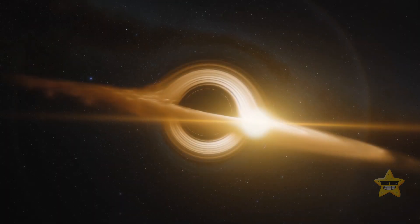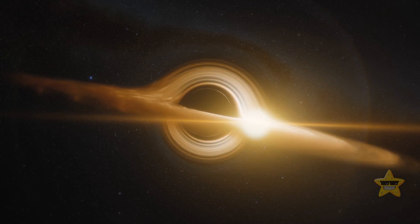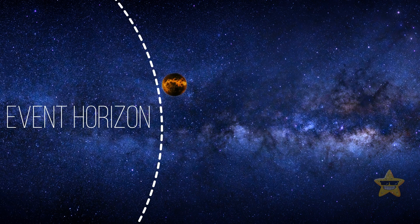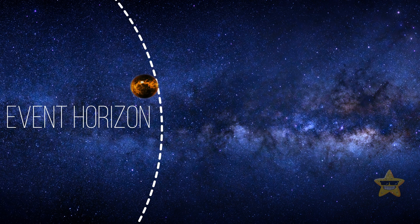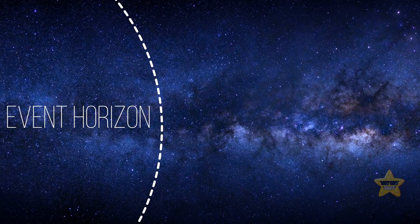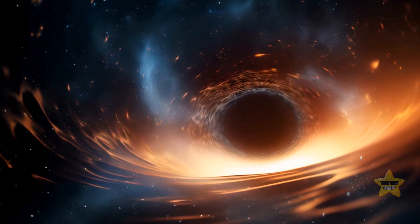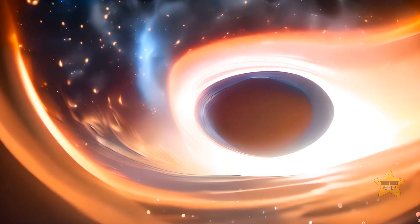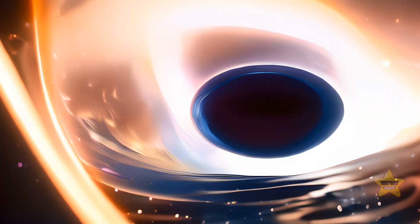The event horizon is a point of no return on the outskirts of a black hole. When something, for example matter, radiation, or light, reaches this boundary, there is no way for it to escape. We can use the event horizon to estimate the size of the black hole. The larger it is, the more massive the black hole you've come across is.